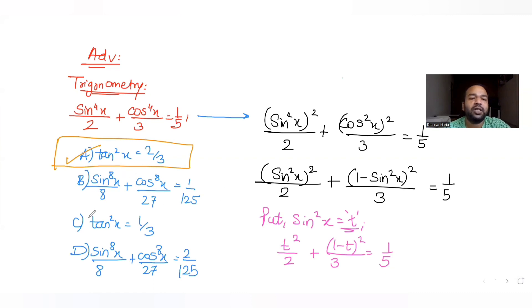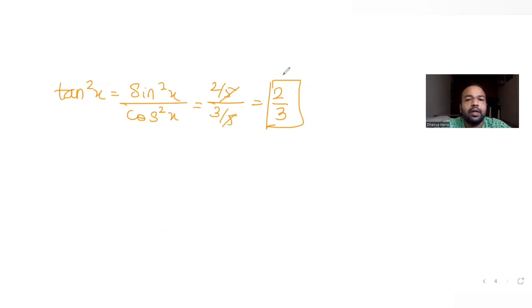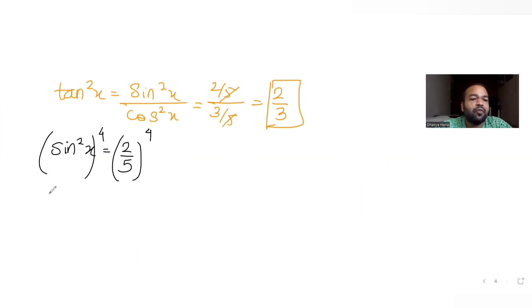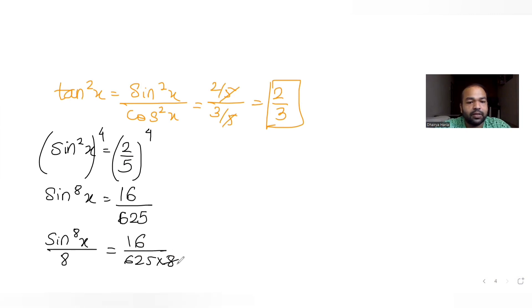Now we need to evaluate sin⁸x/8 + cos⁸x/27 from the remaining options B and D. We have sin²x = 2/5. Taking the 4th power of both sides gives sin⁸x = (2/5)⁴ = 16/625. Dividing by 8 gives sin⁸x/8 = 16/625 ÷ 8 = 2/625.